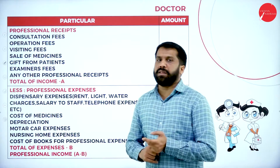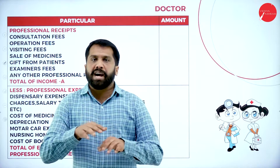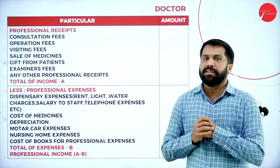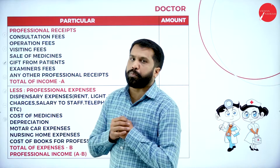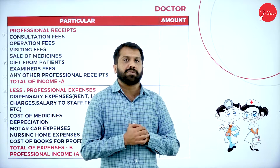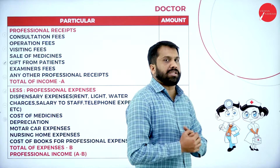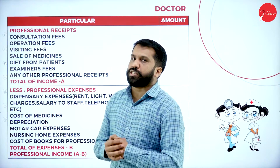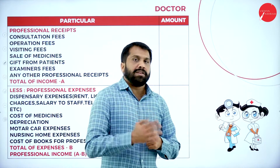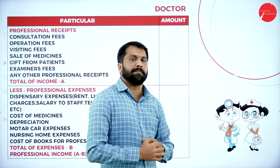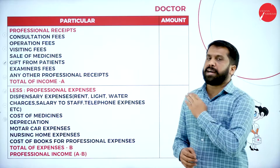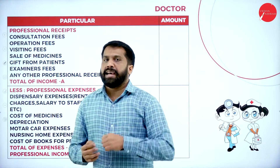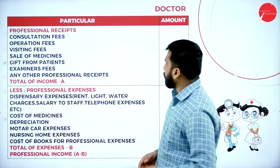Your professional expenditures include: rent for the clinic, electricity bill, salary to staff, telephone bill, depreciation on surgical equipment, repair charges, fuel charges for visiting patients, repair of motor vehicle, and membership renewal fees for your doctor association. All of these come under professional expenditure.